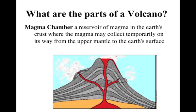There are several parts to the volcano. I recommend you take a moment and draw this basic picture here so we can put labels on it, and then you can take notes on what each of those labels mean. We're going to start with the magma chamber, which is the reservoir — the place where all of the magma is inside the earth's crust — where it collects temporarily on its way from the upper mantle to the earth's surface.